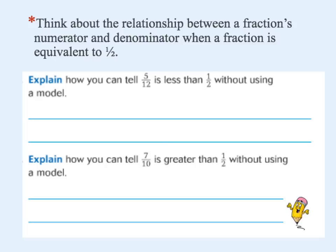Here's a page to record in your notes. Think about what you already know about equivalent fractions, and then think about this: what is the relationship between a fraction's numerator and denominator when a fraction is equivalent to one-half? Explain how you can tell five-twelfths is less than one-half without using a model. Go ahead and pause this, jot down what you think is a good explanation, and then come back and we'll check our notes.